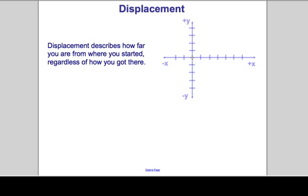If I start at the origin and go up, I have a positive Y displacement. If I go down, I have a negative Y displacement. If I go in this direction, I have a positive X displacement. If I go the other way, I have a negative X displacement. I can start anywhere — if I'm moving in this direction, I have a negative X displacement. If I start here and go up, I have a positive Y displacement. It's simply about which direction you're moving — toward the positive or toward the negative.